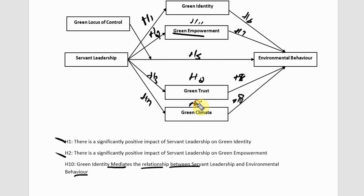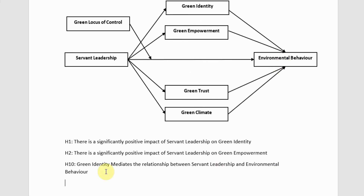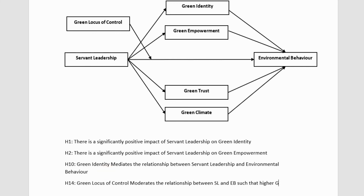This is H12, H13, and H14 — the moderating role of green locus of control. How do you write your moderating hypothesis? H14: green locus of control moderates the relationship between servant leadership and environmental behavior. But this is not enough — you have to explain how it moderates, such that higher green locus of control strengthens the relationship between servant leadership and environmental behavior.